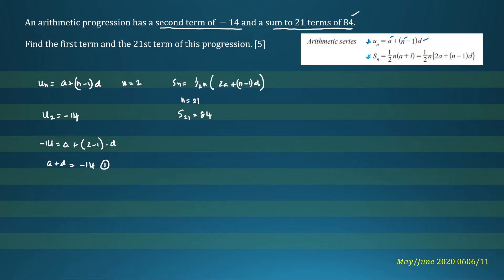Let's substitute the numbers into our formula. The sum of 21 terms is 84, so we can write 84 equals (1/2) times 21 times (2a plus (n minus 1)). And n is 21, so 21 minus 1 is 20, so we can write 20d.